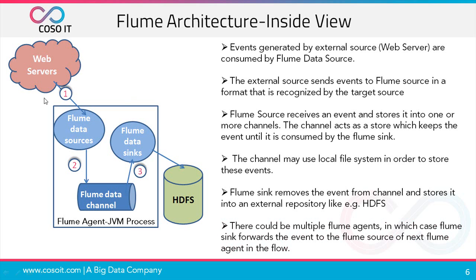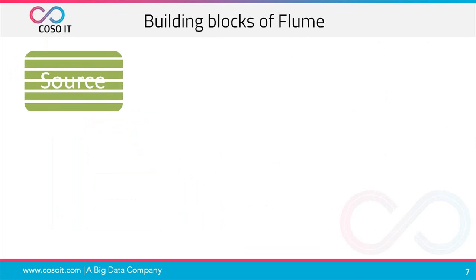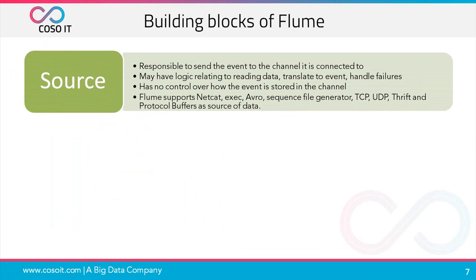In the Flume architecture, the main component is the Flume agent which has three major components: source, channel, and sink. The source is responsible for sending events to the channel it is connected to. It may have logic for reading data, translating to events, or handling failures, but has no control over how events are stored in the channel. Flume supports many source types including netcat, exec, Avro, sequence file generator, TCP, UDP, thrift, and protocol buffers.